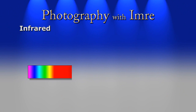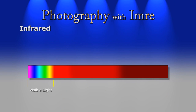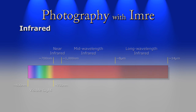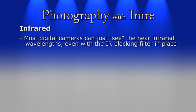Before getting into taking infrared photos, let's quickly examine the electromagnetic spectrum to see where infrared lies. Without getting very technical, there are three major flavors of infrared: near, mid-wavelength, and long-wavelength. The one we're concerned with is the near infrared range, which starts from about 700 nanometers and ends around 1000 to 1200 nanometers depending on your source. As you can tell on this diagram, 700 nanometers is basically the deepest red color that we human beings can see.